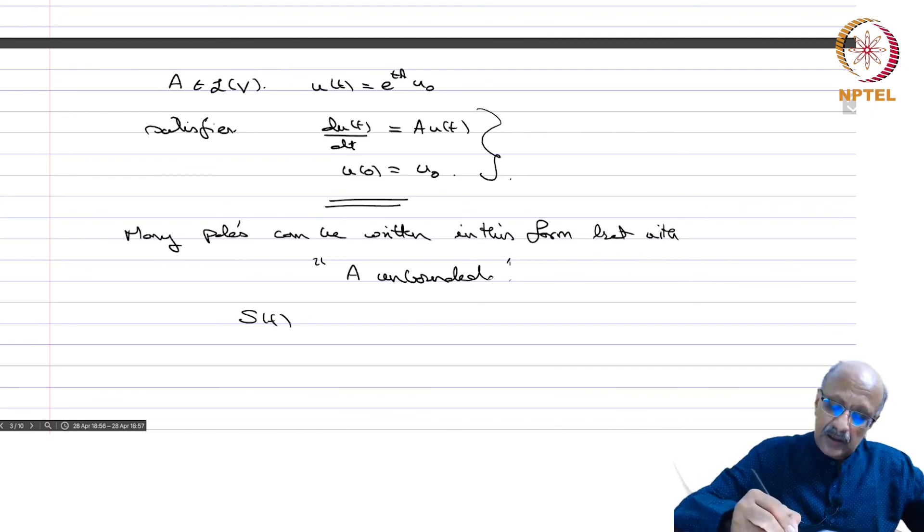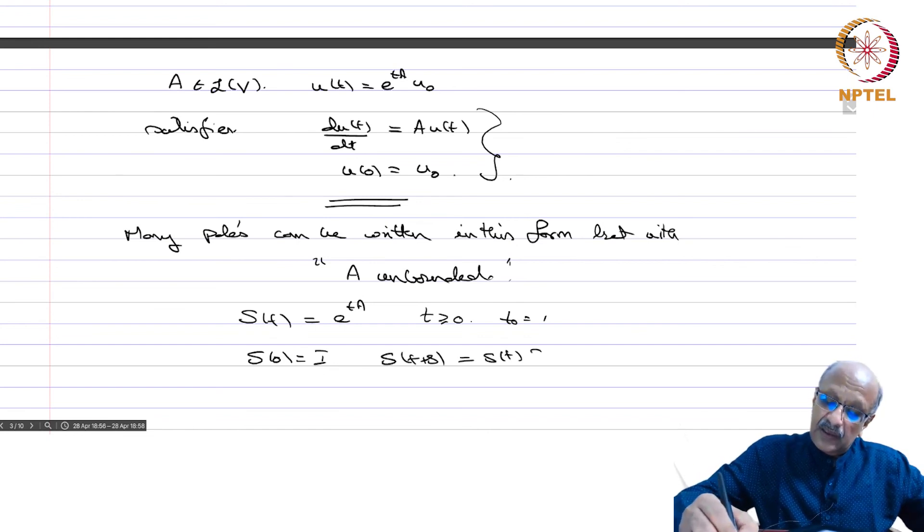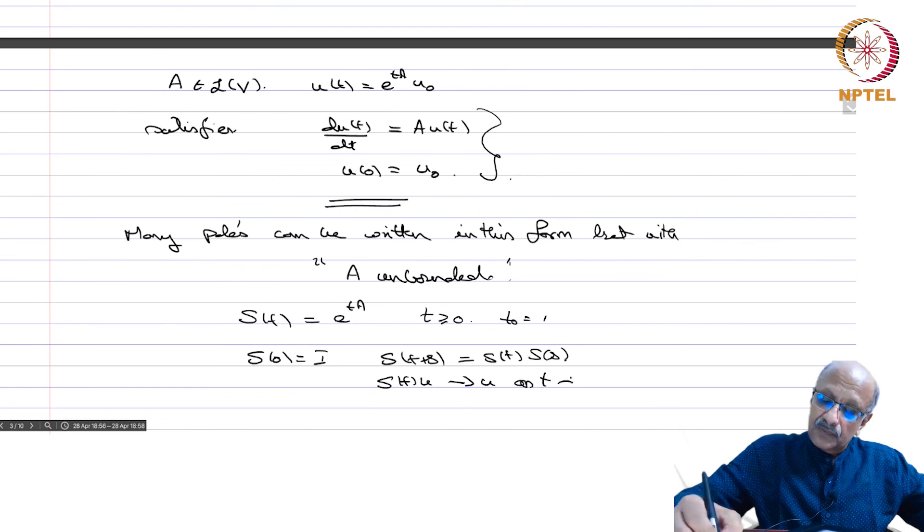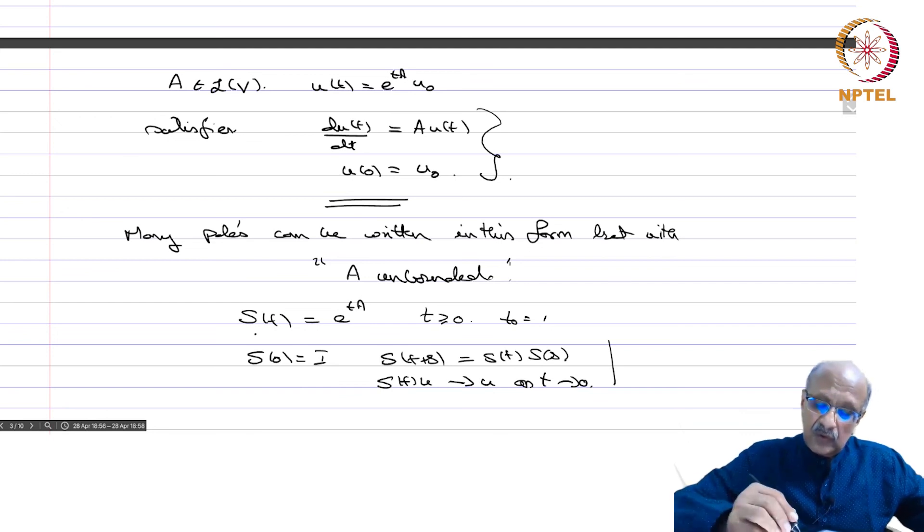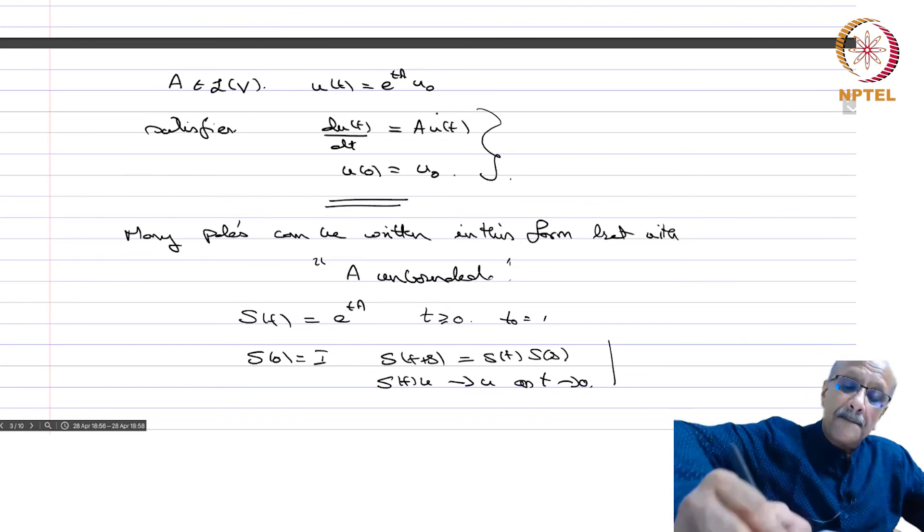So if you write s(t) equals e^(tA), this is the family of operators for t positive. s(0) is identity, and then s(t+s) equals s(t) times s(s). You also have that s(t)u goes to u as t goes to 0. These properties we will generalize to what is called a semi-group or C_0 semi-group. It is a collection of bounded linear operators with some properties, and that will be connected to an unbounded operator. We will look at the solution of such differential equations with respect to these unbounded operators. That is what we will plan to do next.